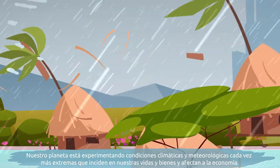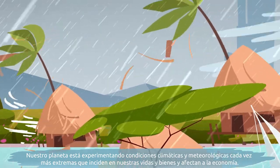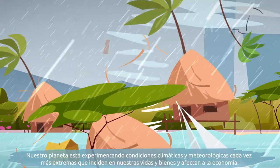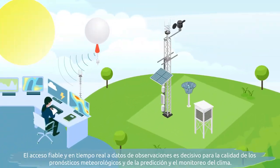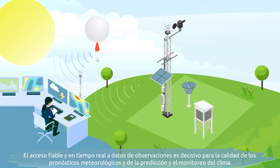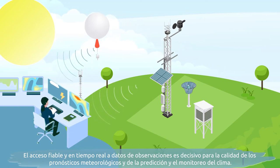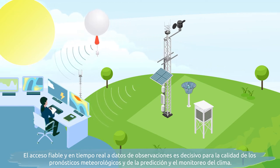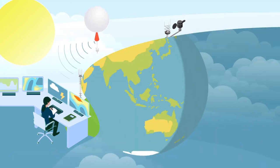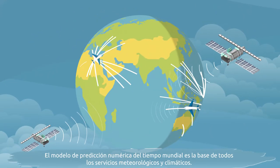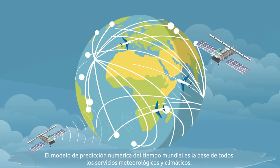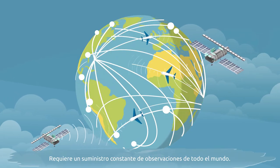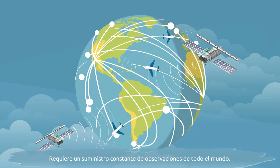Our planet is experiencing increasingly extreme weather and climate conditions that impact our lives, property, and affect the economy. Reliable, real-time access to observational data is critical to the quality of weather forecasts and climate monitoring and prediction. Global numerical weather prediction is the basis on which all weather and climate services are built. It requires a constant supply of observations from around the world.